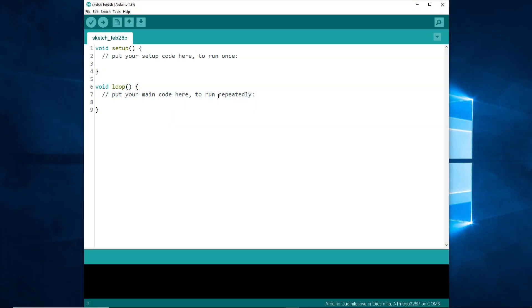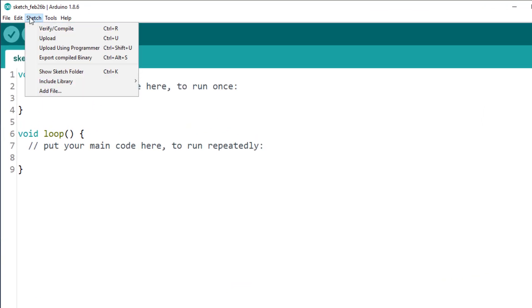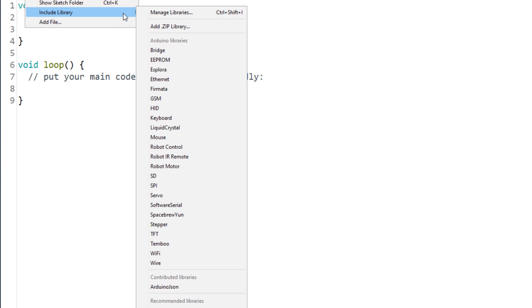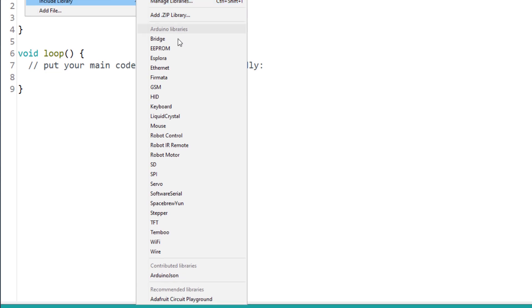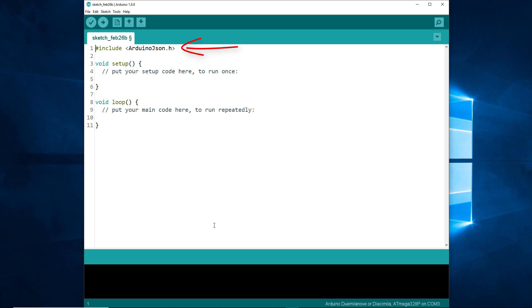Before using the library, we must include it. If you don't remember how to include a library, the Arduino IDE can help you. Click on Sketch, Include library, and Arduino JSON. As you can see, it adds a pound include at the top of the file. Our program is ready to use the library.